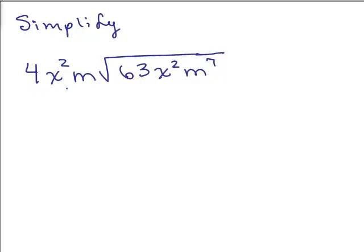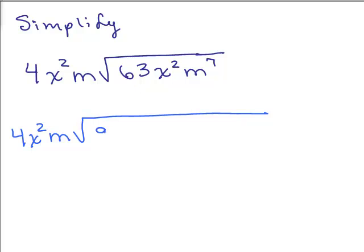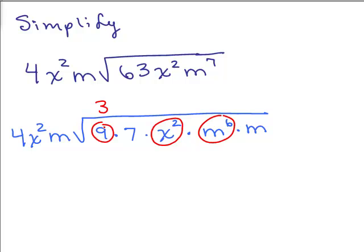Let's work another problem: 4x squared m times the square root of 63x squared m to the 7th. On the outside we have 4x squared m. For 63, hopefully you realize that's 9 times 7 — 9 is a perfect square. x squared already has an even exponent, and m to the 7th I need to write as m to the 6th times m, breaking off that extra m. The square root of 9 is 3, square root of x squared is x, and the square root of m to the 6th is m cubed.